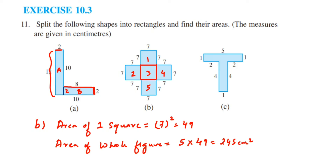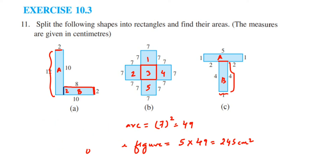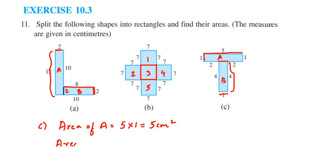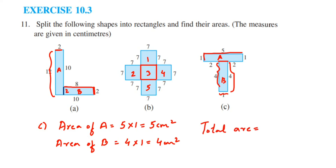Now the last one. I'm going to draw one single line over here. Now we got two rectangles. In the first one, length is 5 and breadth is 1 — let me take it as A. The second one is B, where length is 4 and breadth is 1. We have all the dimensions, so we just substitute and get the answer. Area of A equals 5 into 1, which is 5 cm². Area of B equals 4 into 1, which is 4 cm².